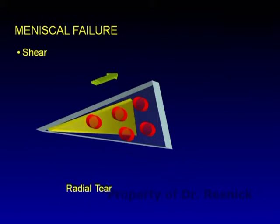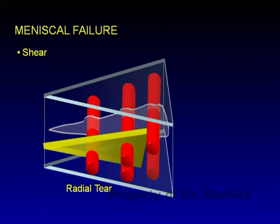Shear force also produces a radial tear — a non-longitudinal tear with no anteroposterior dimension. It begins at the inner margin and proceeds to the periphery, disrupting the longitudinal circumferential fibers. As it does, the torn meniscus opens up like a book, creating an abnormal space with unique MR imaging characteristics.